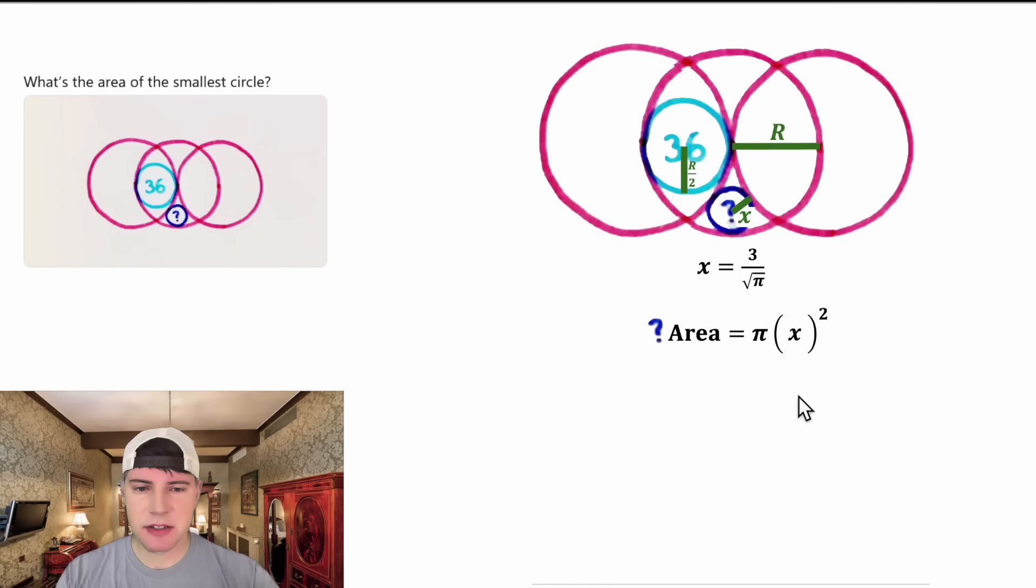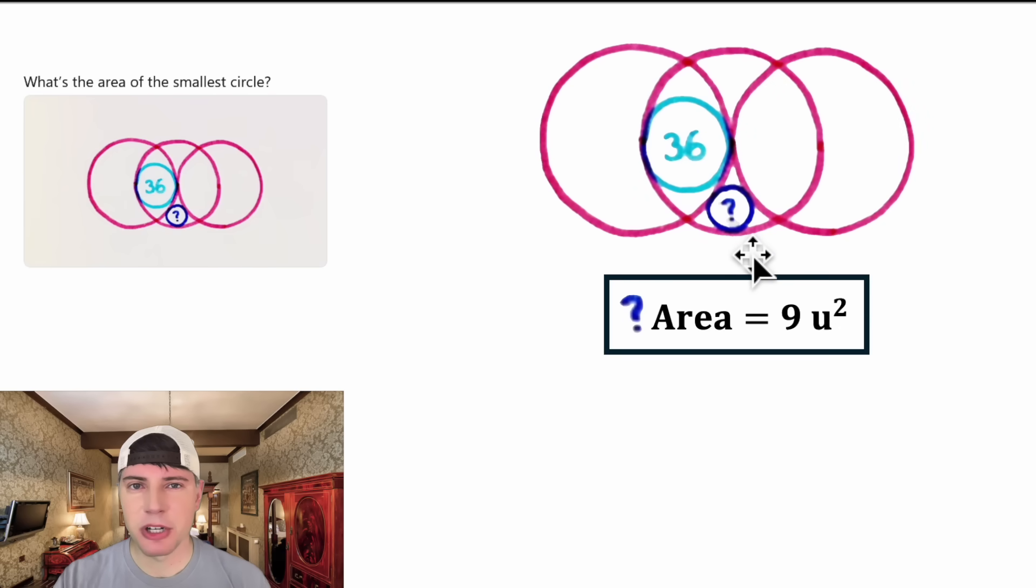In the place of the x, let's plug in 3 over square root of pi. This square will distribute to both the 3 on top and the square root of pi on bottom. On top, 3 squared is equal to 9. On bottom, the square root and the square will cancel each other out. Ultimately, the square root of pi squared is equal to pi. Then this pi on top and this pi on bottom will cancel each other out. We've simplified everything down to 9. In this diagram, the area of the question mark circle is equal to 9 units squared. That's exactly one fourth of the 36. I wonder if there's a faster way to do this. How exciting. I think this is a fun one.